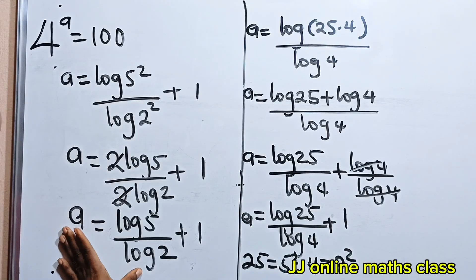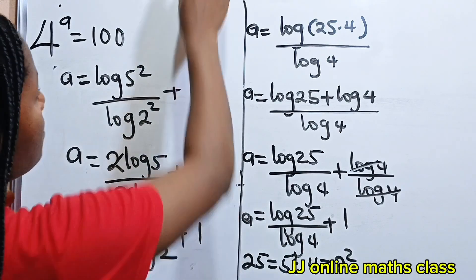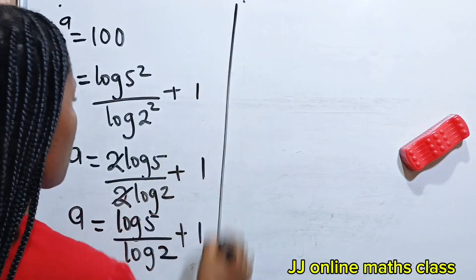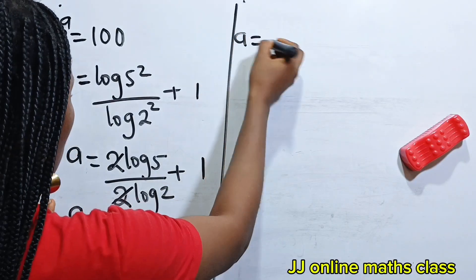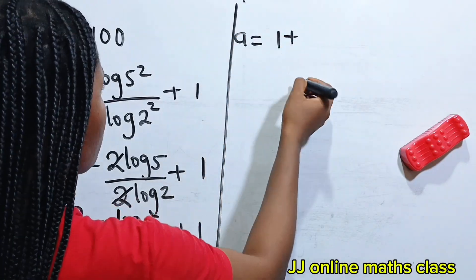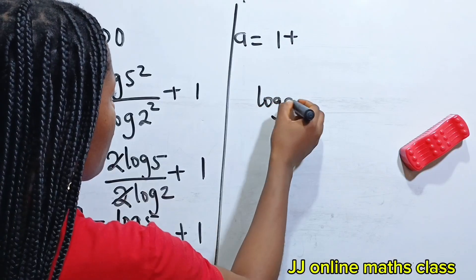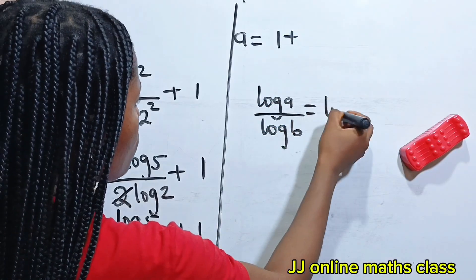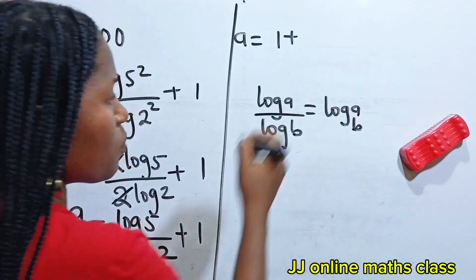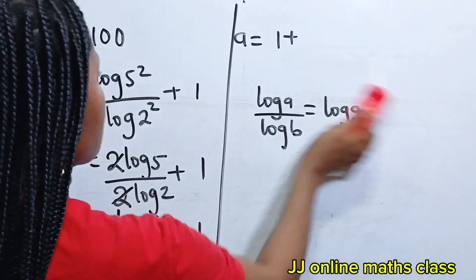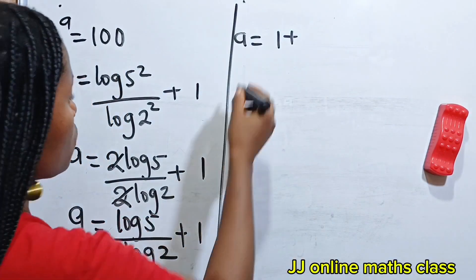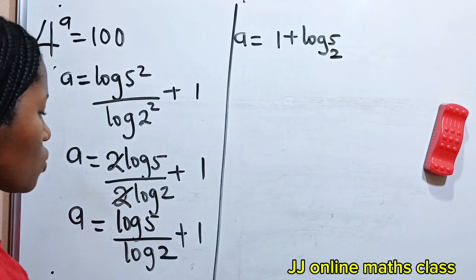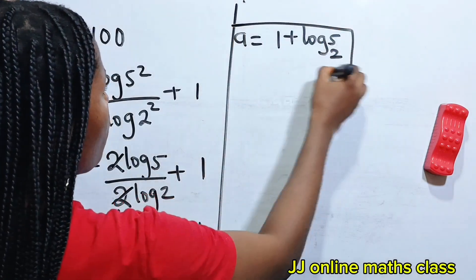We can simplify this further as A is equal to 1 plus log A divided by log B, which is equal to log A base B. So that means we can write this as A is equal to 1 plus log 5 base 2. And this is the value of our A.